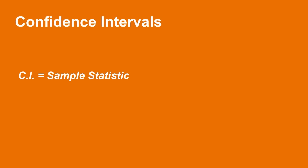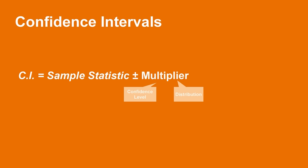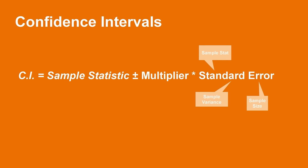Confidence intervals all begin with the sample statistic at their center. From there, we add and subtract by a factor consisting of two components: a multiplier, which is dependent on the desired confidence level and the underlying distribution of the sample, and a standard error. The standard error is a function of the sample statistic, some metric of the sample variance, and the sample size. The following table summarizes the components of this general structure.